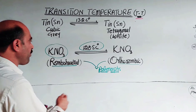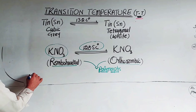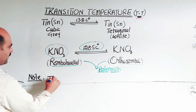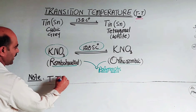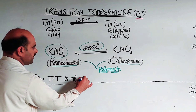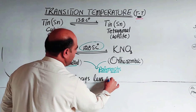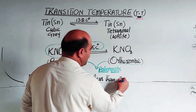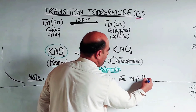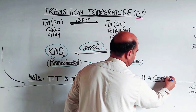This is a very important point to be noted: transition temperature will always be less than the melting point — always less than the melting point of the compound or element.